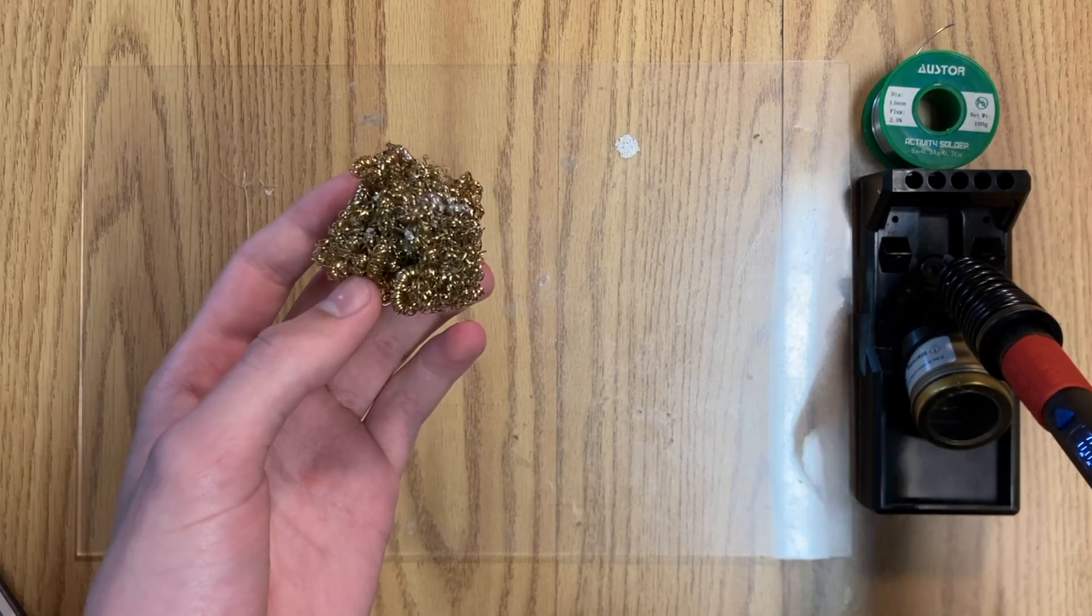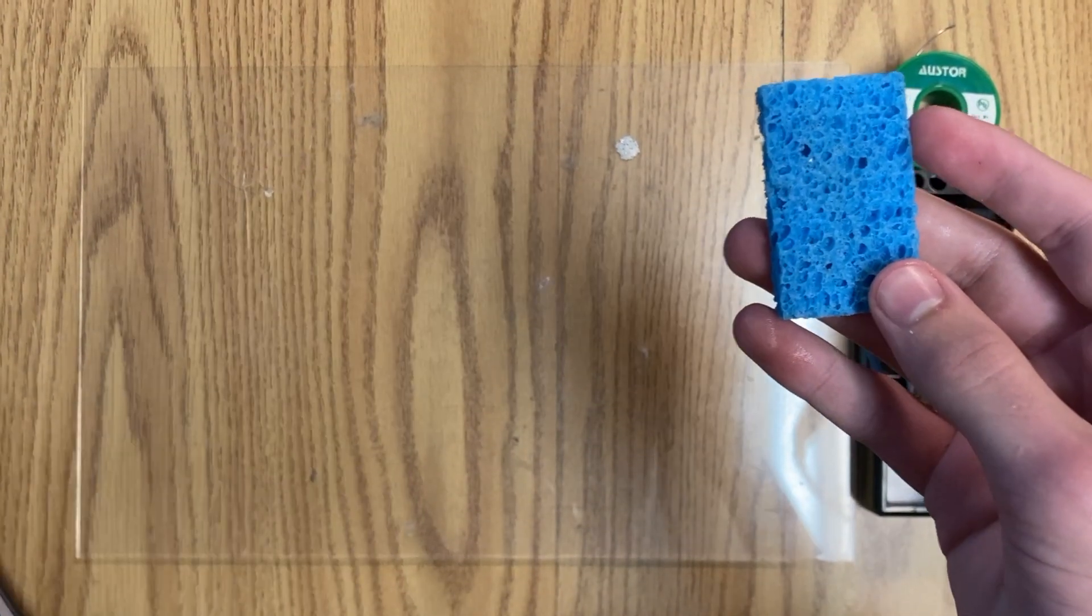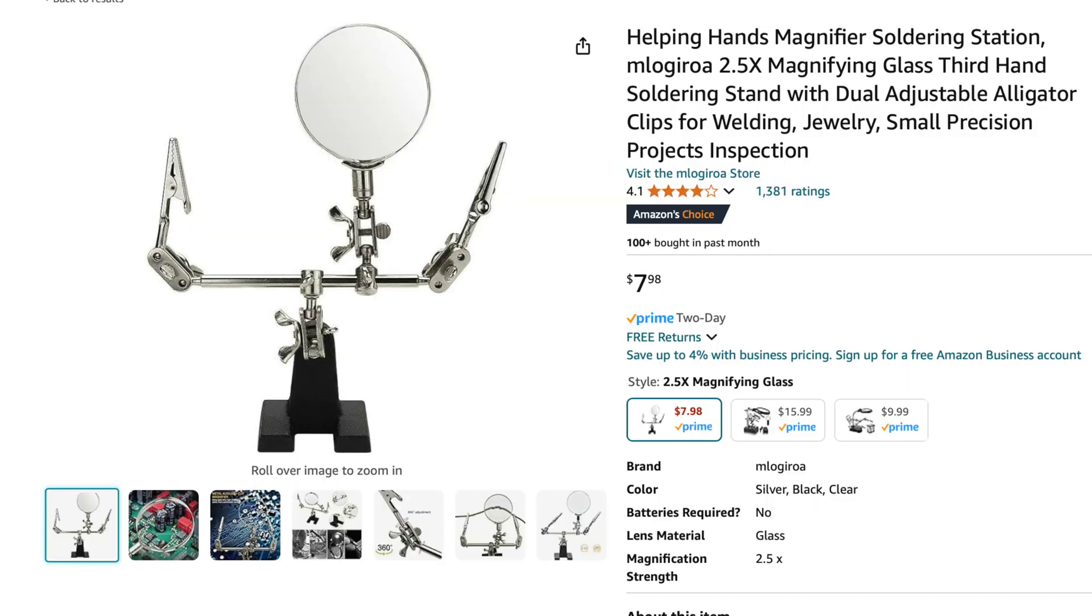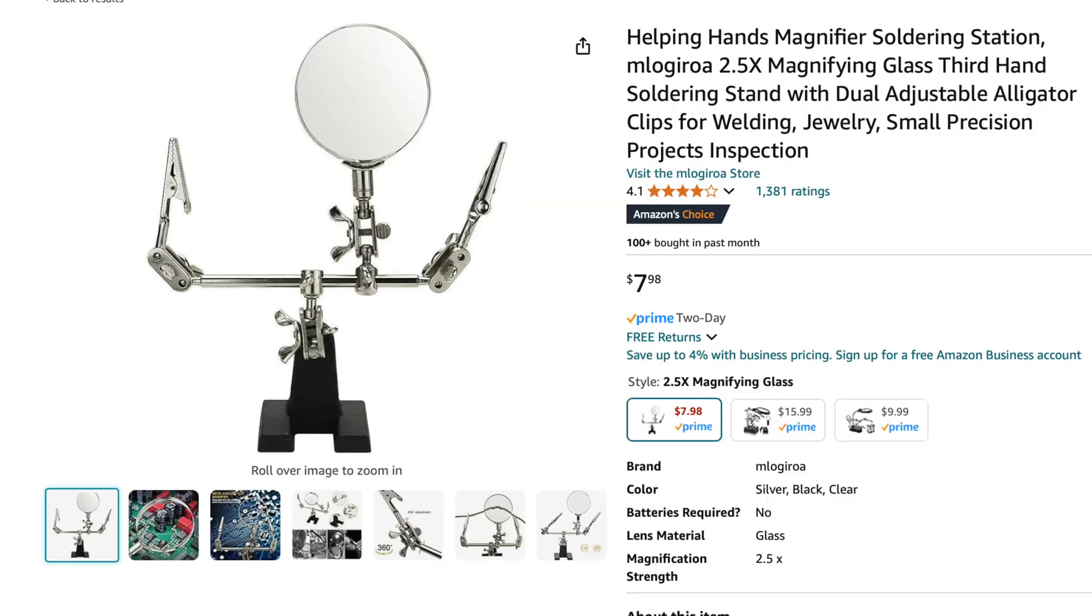You'll also want a way to clean off your iron's tip, which could be a wet sponge or some brass wool. The last thing we need is something to hold the stuff we're soldering in place. I usually use this little helping hands thing, which you can get for under $10 on Amazon.